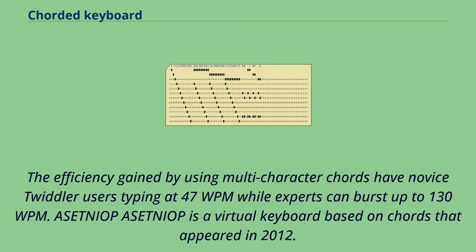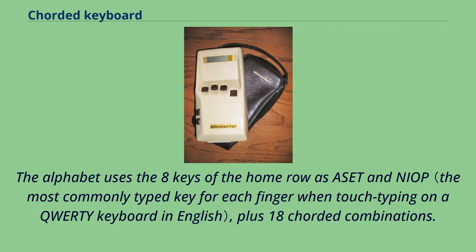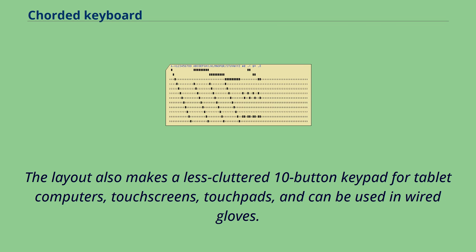Aset-Niop is a virtual keyboard based on chords that appeared in 2012. The alphabet uses the eight keys of the home row as ASET and NIOP, plus 18 chorded combinations. The layout also makes a less cluttered 10-button keypad for tablet computers, touchscreens, touchpads, and can be used with wired gloves.